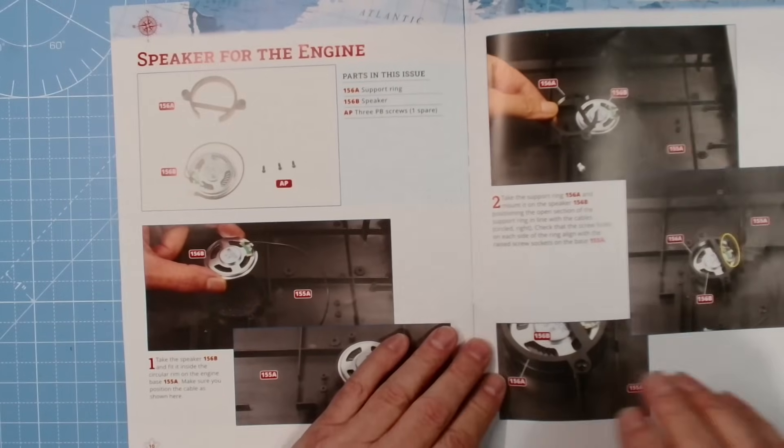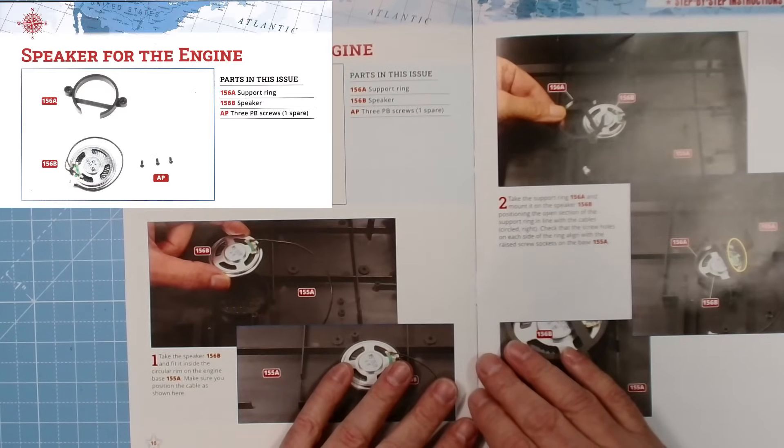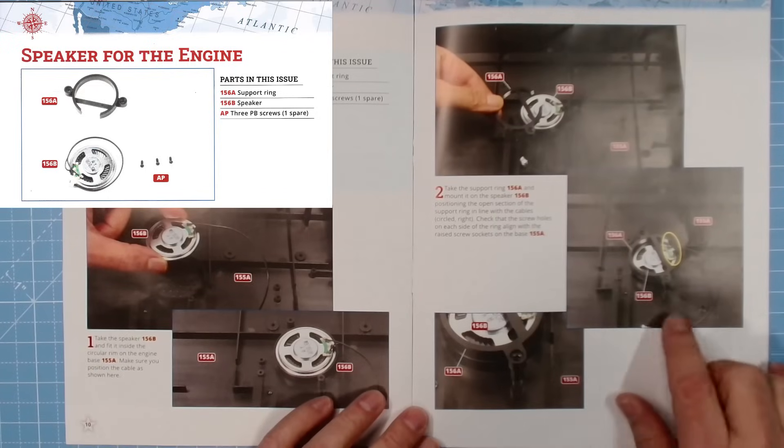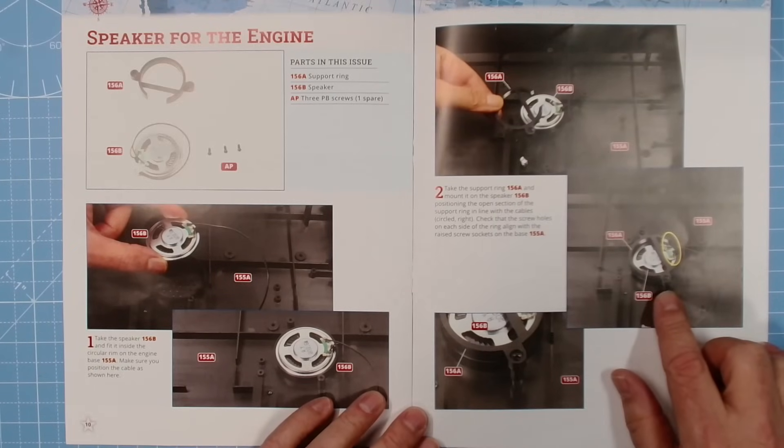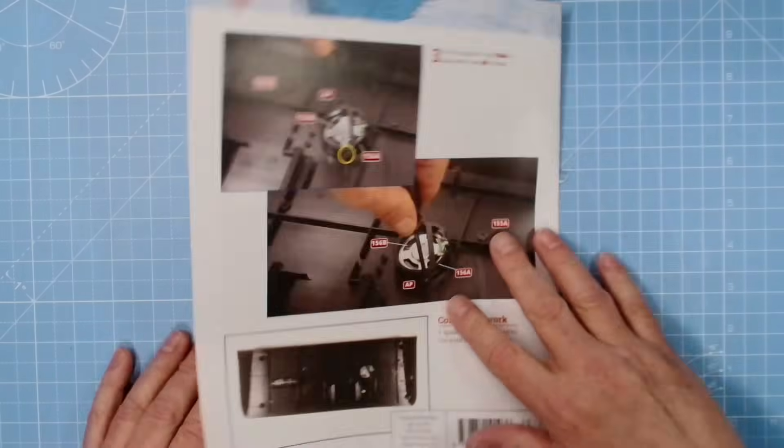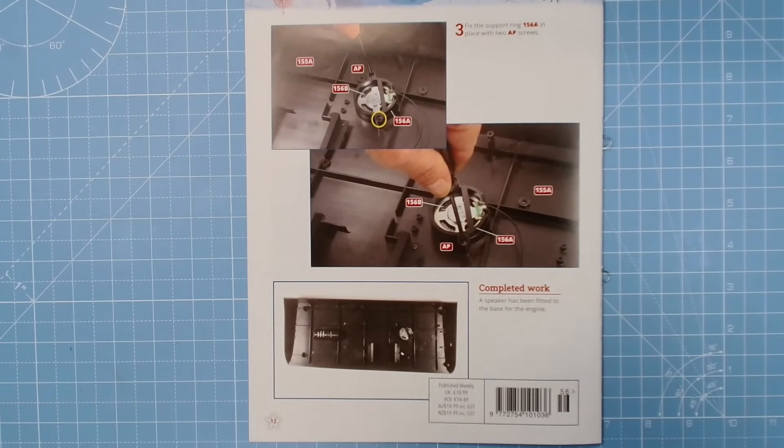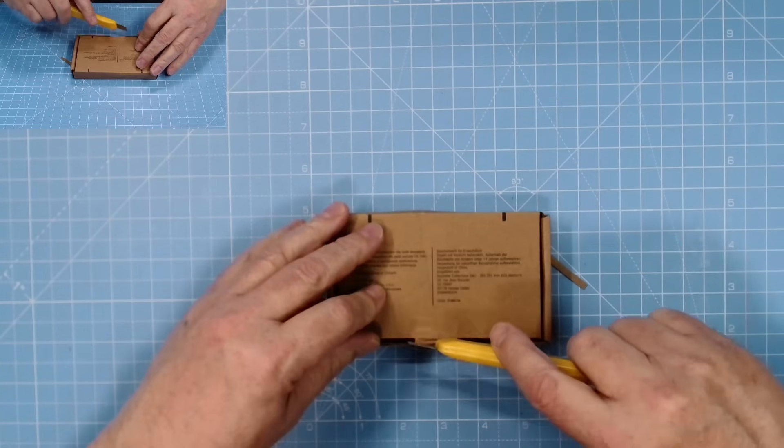There we go, speaker for the engine, parts in this issue: support ring, speaker and AP screws. So basically let's pop these speakers to place on that base and that is completed work. So without further ado, let's get on with the build, let's get the parts out.